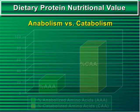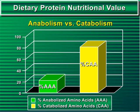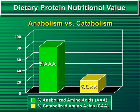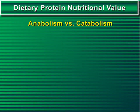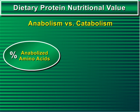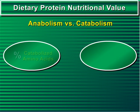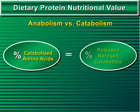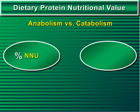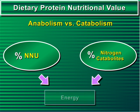Anabolism versus catabolism. The percentage of a protein's anabolized amino acids is inversely proportional to that of those catabolized. Therefore, the higher the percentage of AAA, the lower that of CAA, and vice versa. The percentage of amino acids following the anabolic pathway to act as precursors of body protein synthesis is equal to its net nitrogen utilization, or NNU. Meanwhile, the percentage of amino acids following the catabolic pathway is equal to the percentage of its released nitrogen catabolites. Thus, by knowing a protein's percentage of NNU or released nitrogen catabolites, its released amount of energy can be determined.